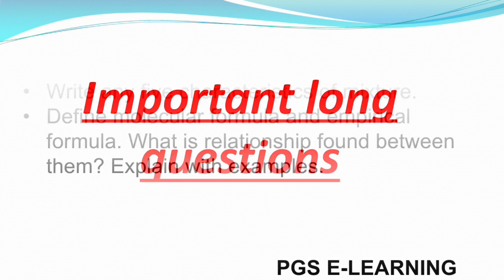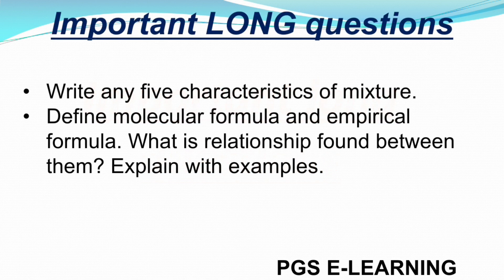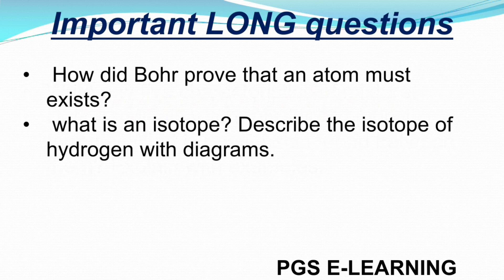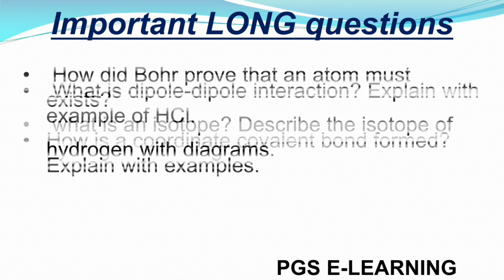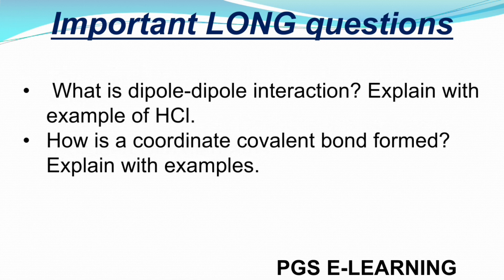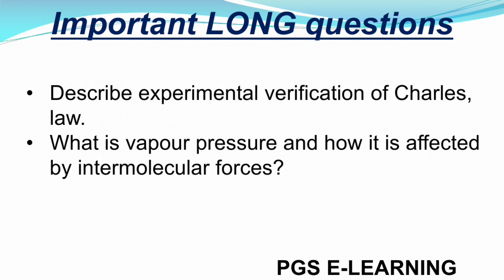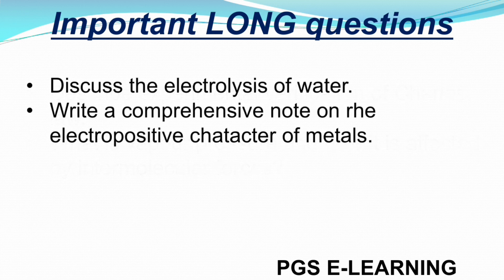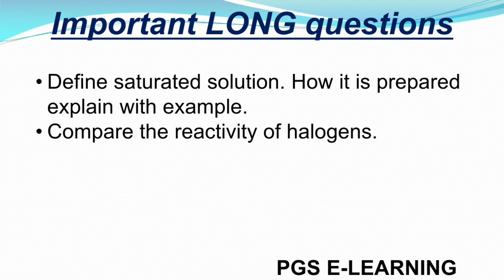Now we will discuss some important long questions that will come in your paper: List any five characteristics of a mixture and define molecular formula, empirical formula, and their relationship. How did Bohr prove that an atom must exist? What are isotopes? Describe the isotopes of hydrogen with diagrams. What is dipole-dipole interaction? Explain with the example of HCl. What is a coordinate covalent bond? Explain with examples. Describe the experimental verification of Charles's law. What is evaporation and how is it affected by intermolecular forces? Discuss the electrolysis of water. Write a comprehensive note on the electrochemical reactivity of metals. Define saturated solution and explain how it is prepared with examples. Compare the reactivity of halogens.